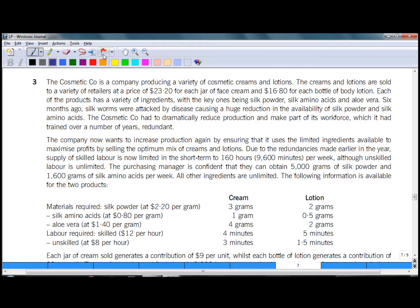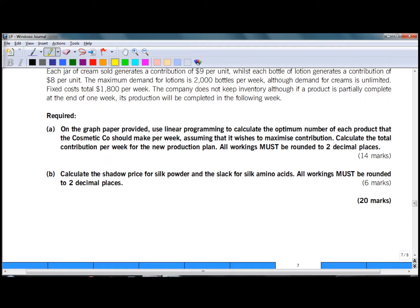In question 3, a cosmetic company is producing a variety of creams and lotions. Before reading further, let's check the requirements at the end of the question. There are two parts. In part A, on the graph paper provided, use linear programming to calculate the optimum number of each product that the cosmetic company should make per week. The products are creams and lotions.